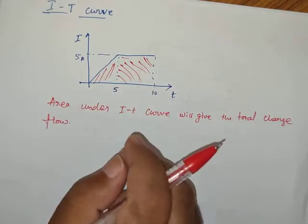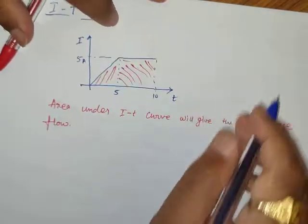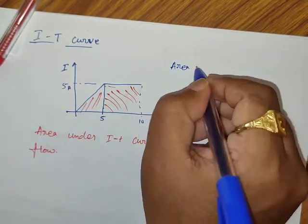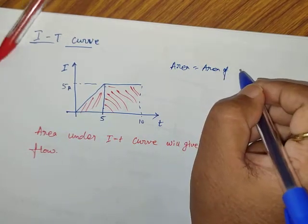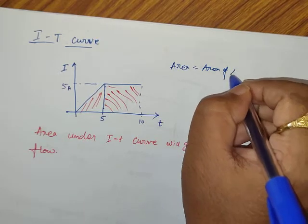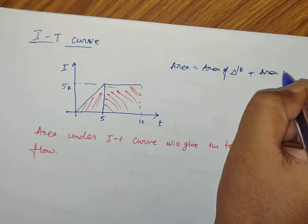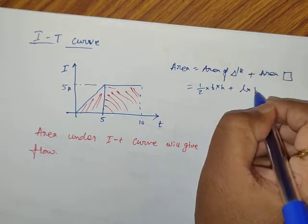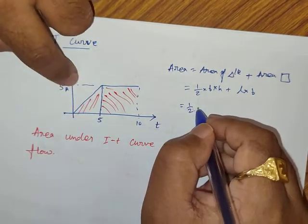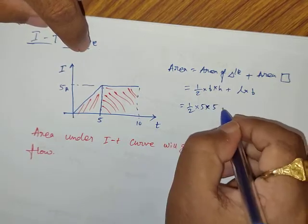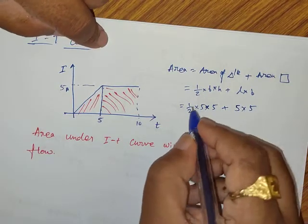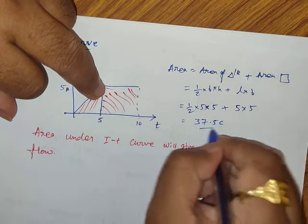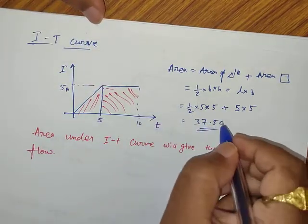For example, suppose a current rises and then stays flat. If the time goes from 0 to 5 seconds for the rising part, and 5 to 10 seconds for the flat part, with current of 5 A, then the total charge is the area of the triangle plus the area of the rectangle. Area = (1/2)(5)(5) + (5)(5) = 12.5 + 25 = 37.5 coulombs.